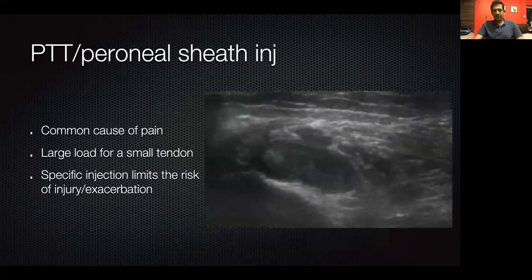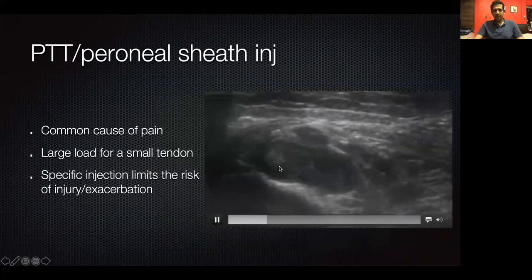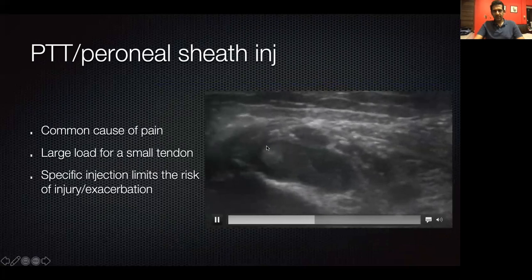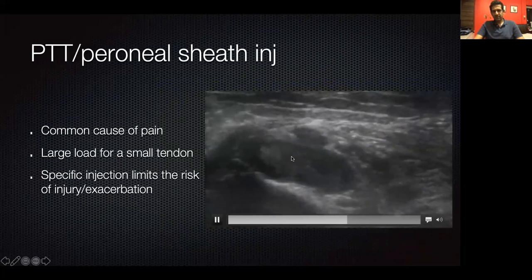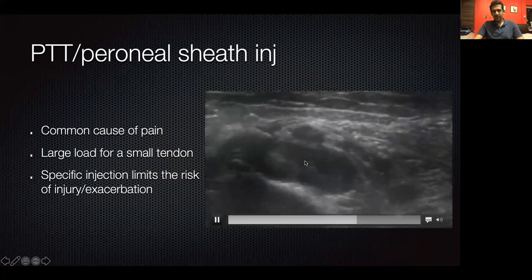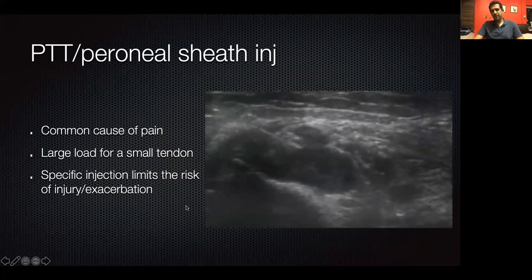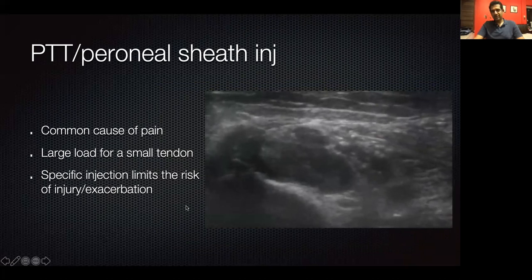For a posterior peroneal tendon sheath injection, you can see the needle coming in from the side into the tendon sheath very clearly. You can redirect it, make sure you're in the sheath, inject, and as the sheath distends you can confirm you're within the sheath.